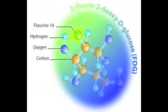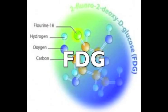PET works using a drug called a radiopharmaceutical, or radioactive tracer. This drug is made by combining a chemical which will travel to certain parts of the body together with a radioactive element. The most common tracer is glucose combined with fluorine-18 and is called FDG: 2-fluoro, 2-deoxy, D-glucose.